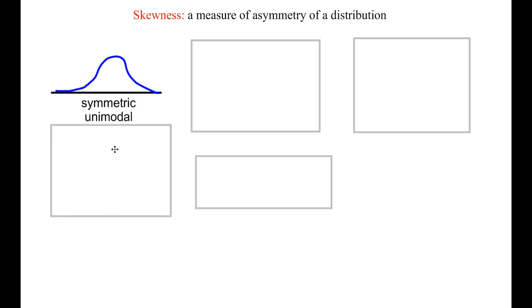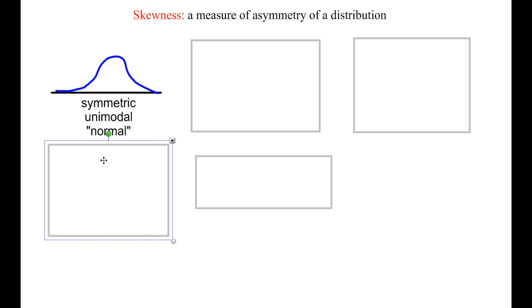So it would be called symmetric and unimodal. Another term is normal. You might have heard something called a normal curve, or it follows the normal or bell distribution. Whenever you hear that, it's referring to a single peak in the middle in fairly symmetrical shape.